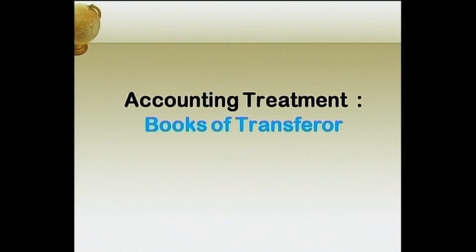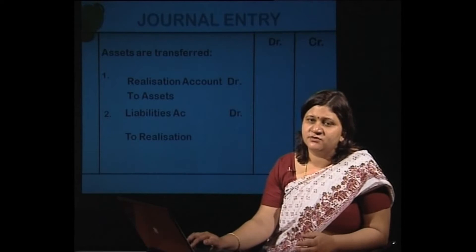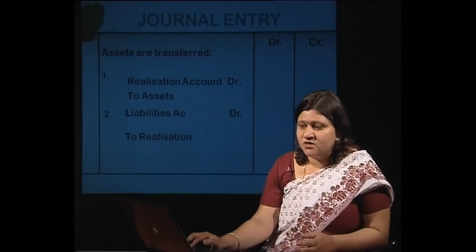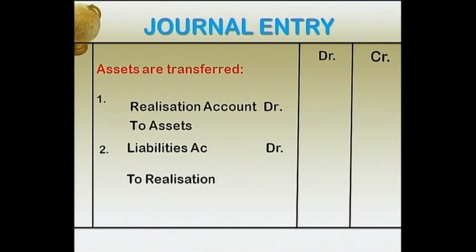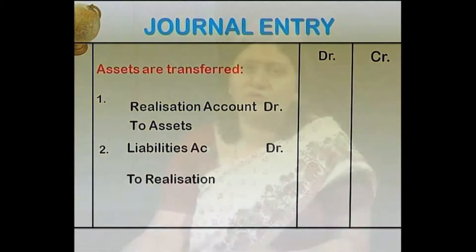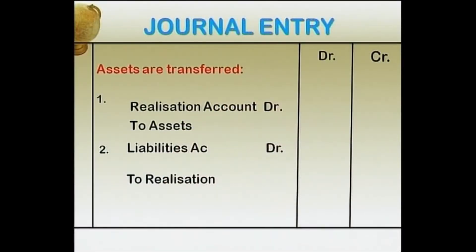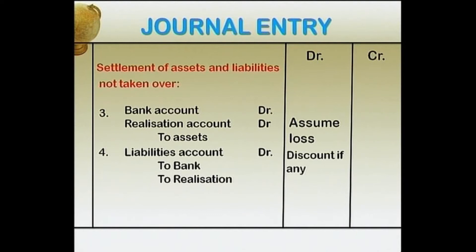Let us understand the accounting treatment in the books of the transferor. The first entry is: Realization Account debit, to Assets — assets are being transferred to the realization account either at book value or the agreed price. The second entry is: Liabilities Account debit, to Realization — liabilities standing on the liability side of the balance sheet are transferred to the realization account and reflected on the credit side.